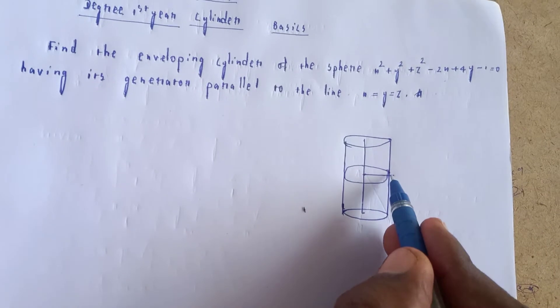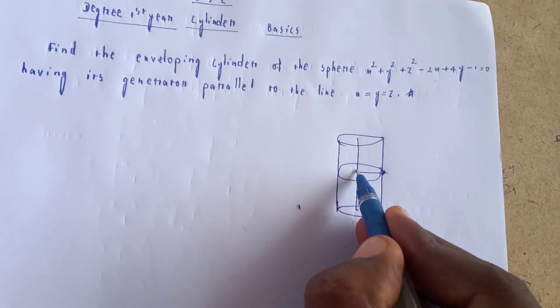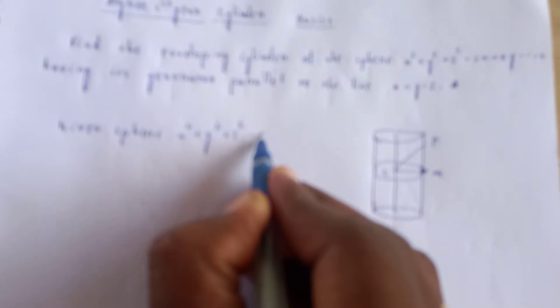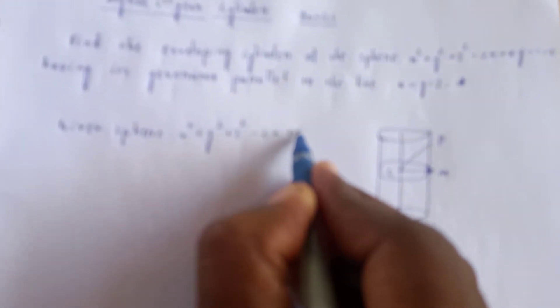See the sphere equation with the radius. The sphere equation is given. The given sphere equation is x squared plus y squared plus z squared minus 2x plus 4y minus 1 is equal to 0.